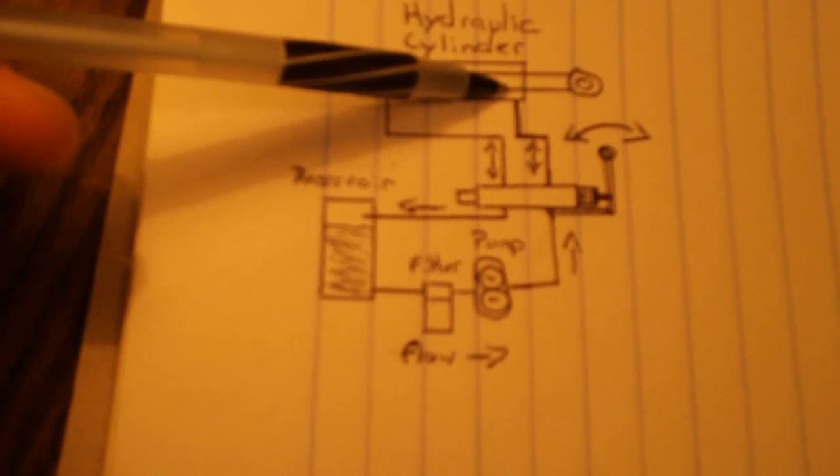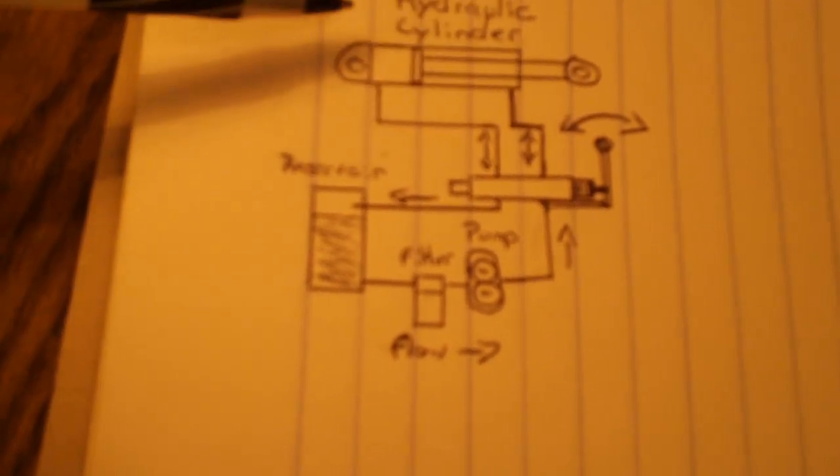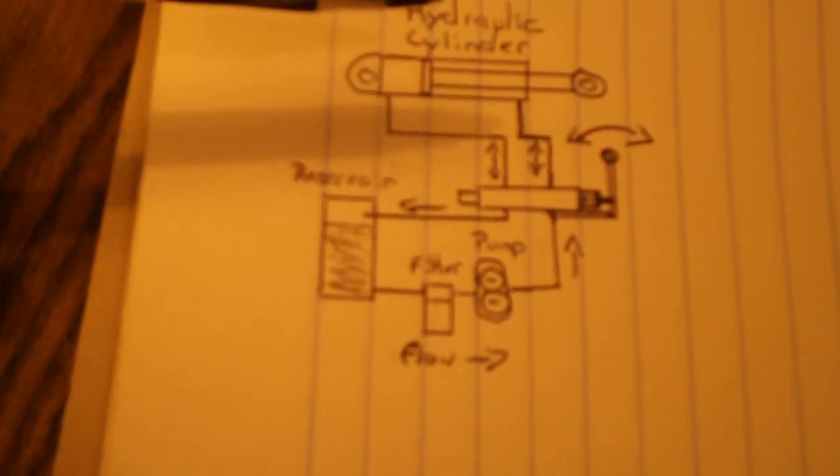Go to the cylinder here, and basically this line here will push your cylinder in, and then this line here will push your cylinder out. So basically this one will extend the hydraulic cylinder out, and this hose here will retract it back.